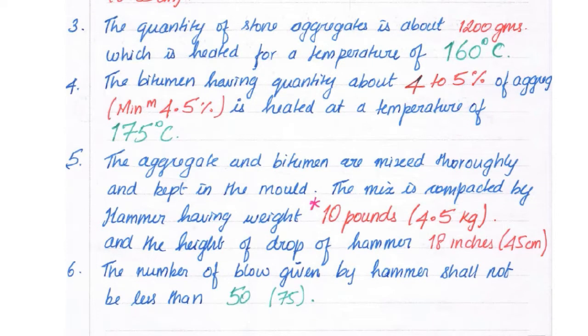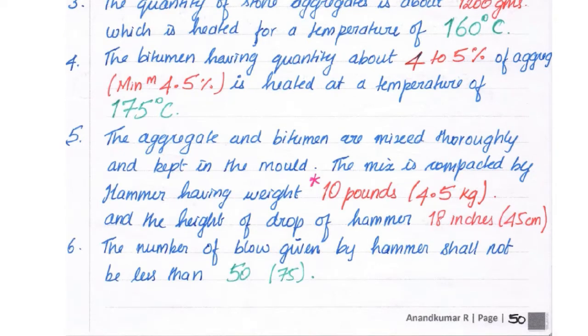The aggregate and bitumen are mixed thoroughly and kept in the mold. The mix is compacted by hammer having weight of 10 pounds (4.5 kg) and having free fall of drop hammer 18 inches (45 cm).